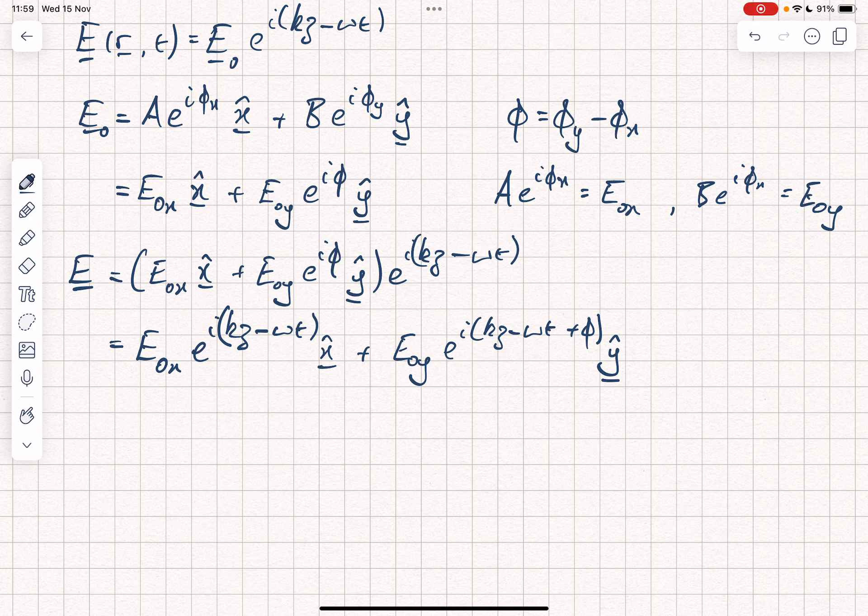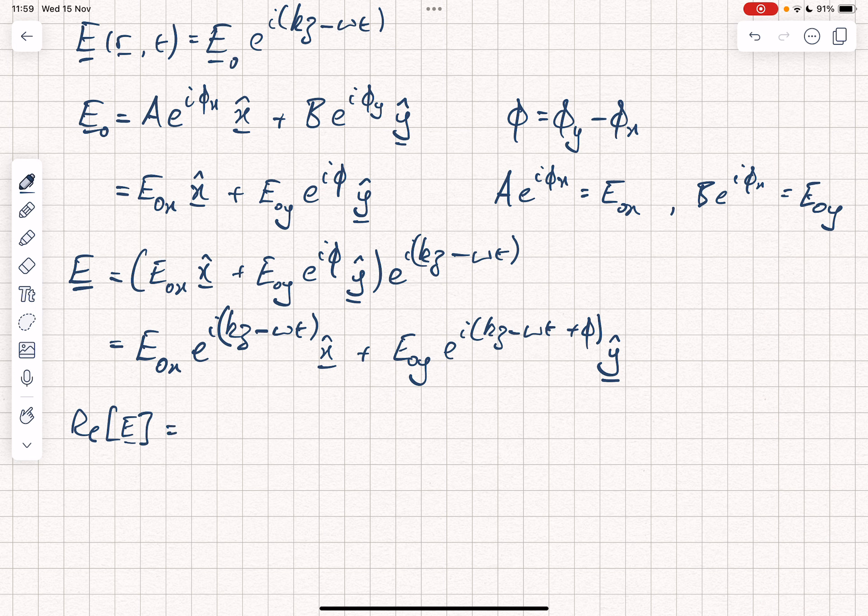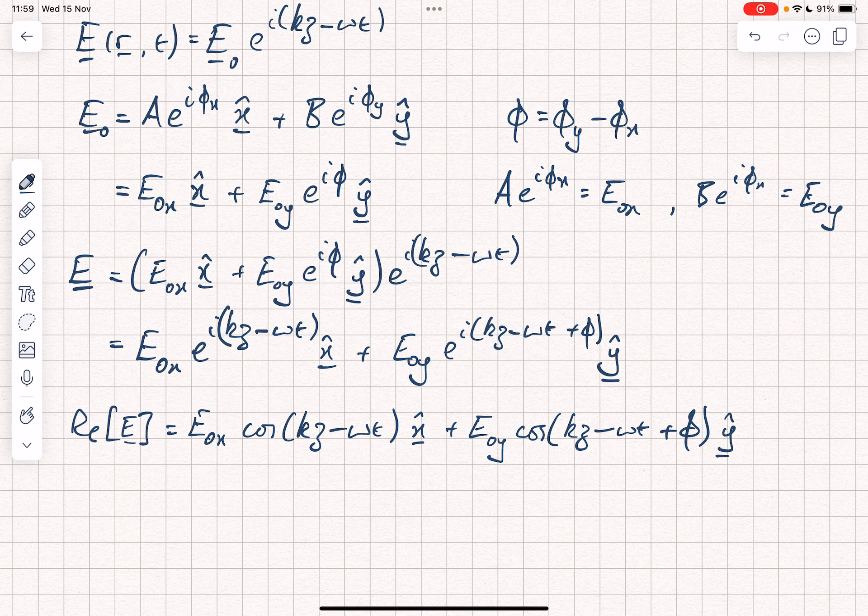If we're wanting to think about the electric field itself, we can take the real part because the real part is the only thing that is physically real, physically appropriate. So we would write that the real part of the electric field equals E0x cos(kz minus omega t) in the x direction plus E0y cos(kz minus omega t plus phi) in the y direction. There are many other ways of writing this. I think this is perhaps the most compact form.